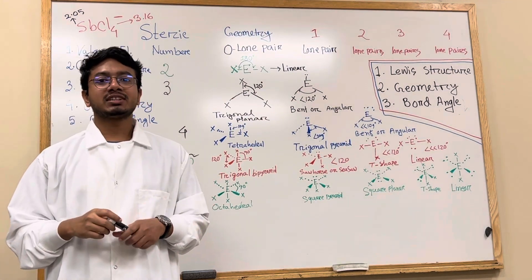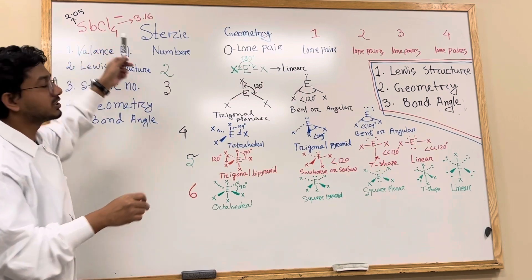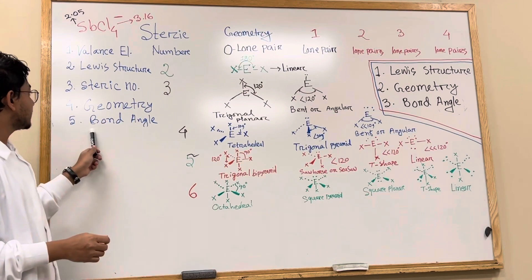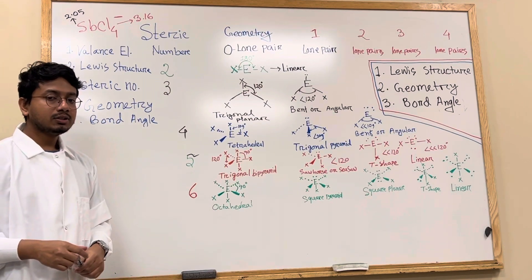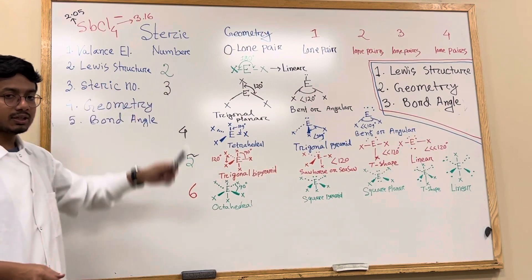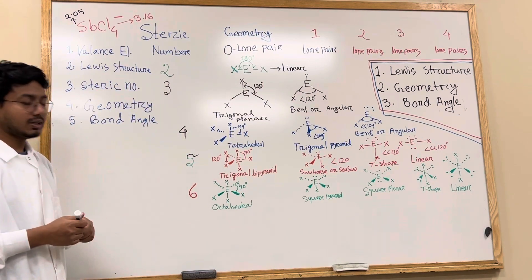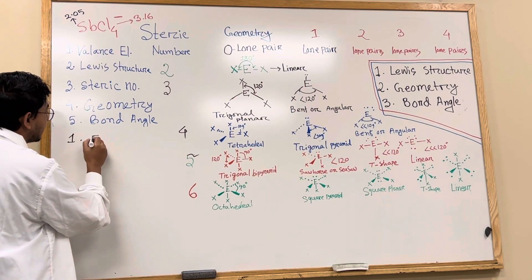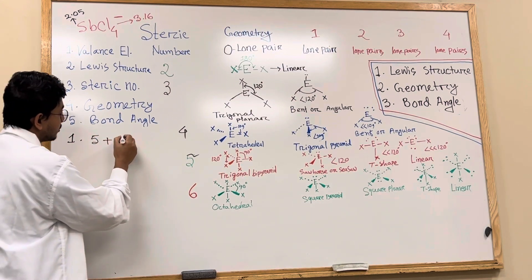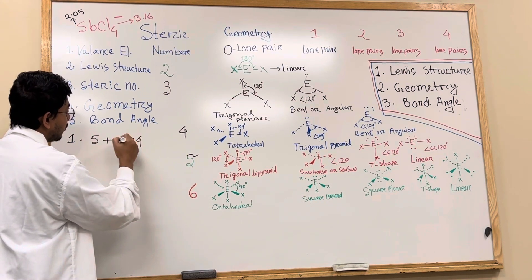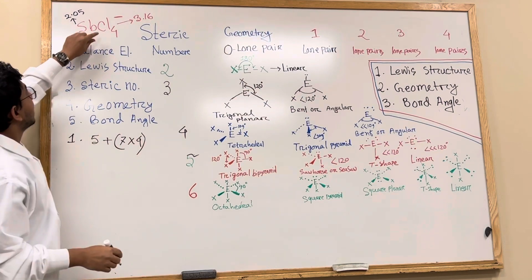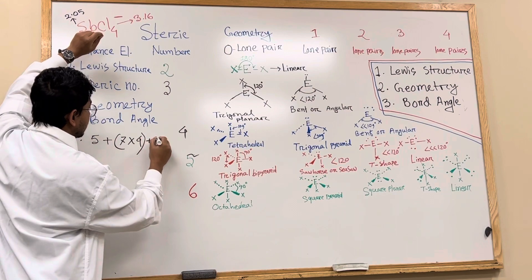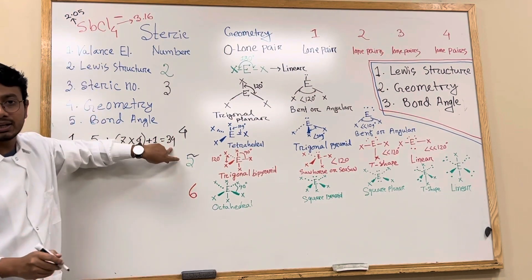In this video I am going to discuss specifically the compound SbCl4⁻ — its Lewis structure, geometry, and bond angle. Before drawing the Lewis structure, we need to find the valence electrons. Antimony has five valence electrons and chlorine has seven. Seven multiplied by four (for the four chlorine atoms) plus one extra electron from the negative charge gives us thirty-four valence electrons total.